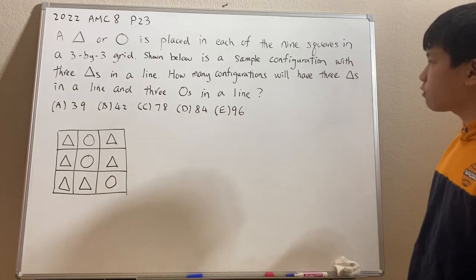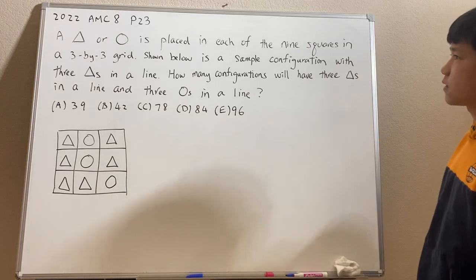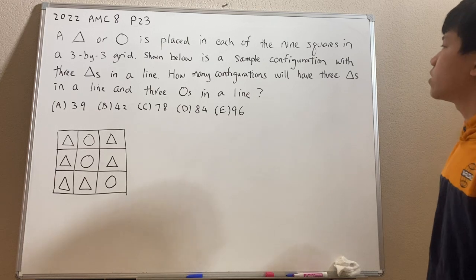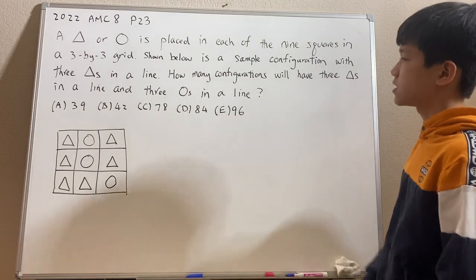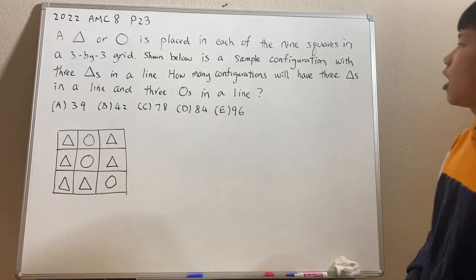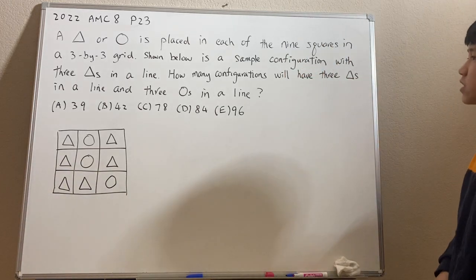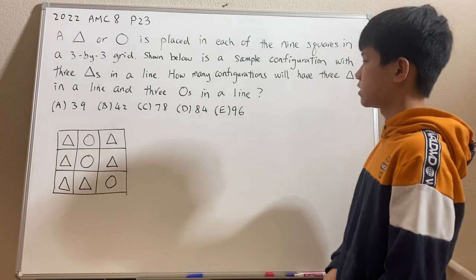So the problem reads, a triangle or circle is placed in each of the nine squares in a 3x3 grid. Shown below is a sample configuration with three triangles in a line. So here's the line. And how many configurations will have three triangles in a line and three circles in a line?